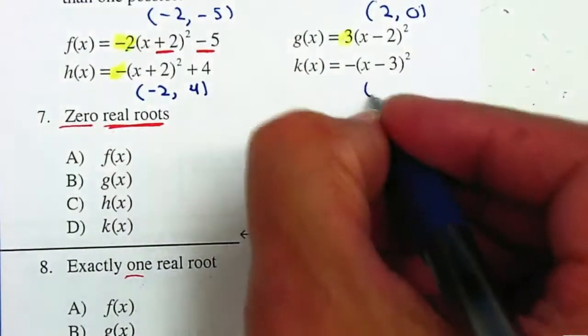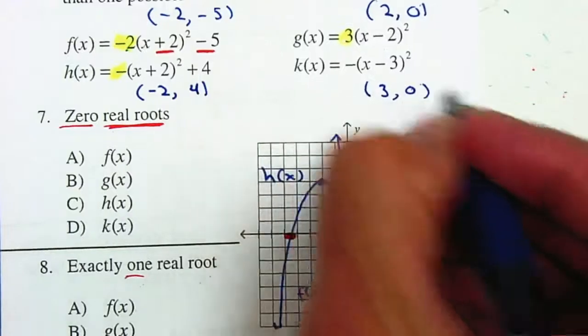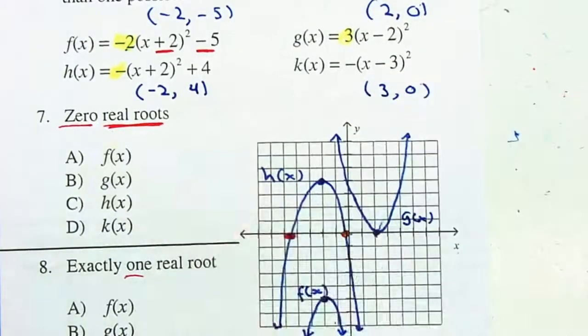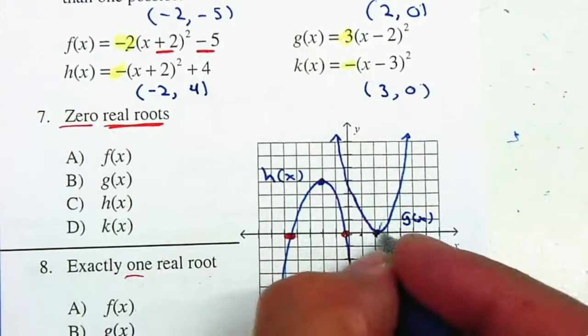And the last one, your vertex is 3 and 0. Remember, your h is the opposite, and there's no k. And this is facing down. So 1, 2, 3, and 0.